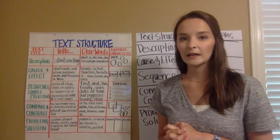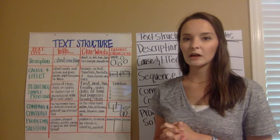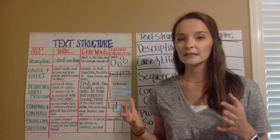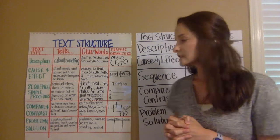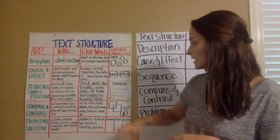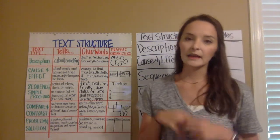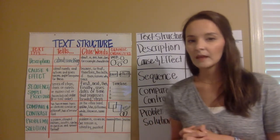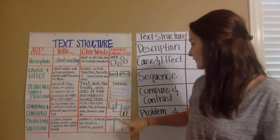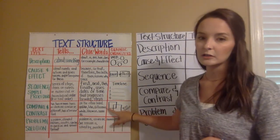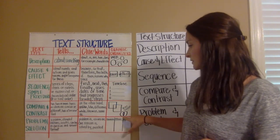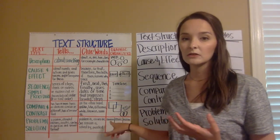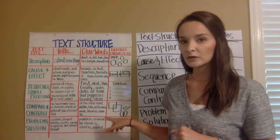The fourth text structure we're going to talk about is compare and contrast — where you're trying to see the similarities and differences between two different things. Some key words are: on the other hand, unlike, like, different, same. For that, we use a Venn diagram — you can use squares or bubbles — and sometimes we even do the top hat method.